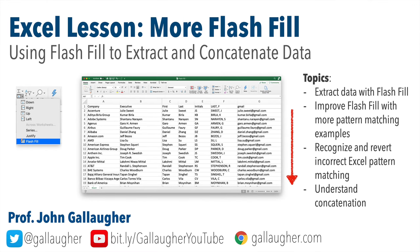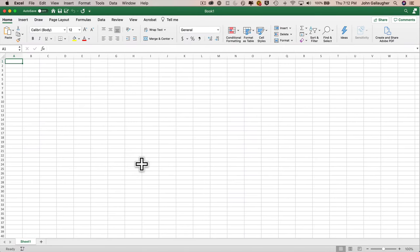Welcome back. We've already worked with autofill, but in this video lesson we're going to see how we can leverage flash fill in Excel to automate extracting data from a column or combining data from two or more columns into a single cell — that's referred to as concatenating data. Flash fill can be a tremendous time saver, but it requires a bit of vigilance because Excel isn't always perfect at detecting the patterns we want.